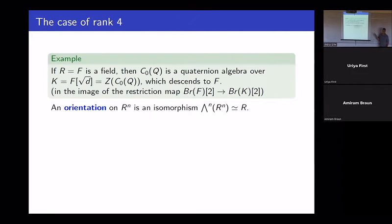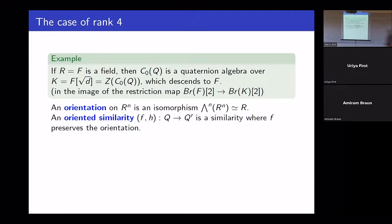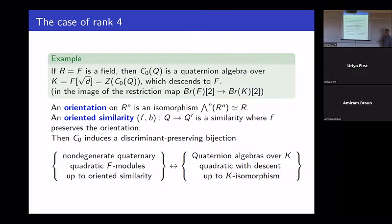For that, we use orientation. An orientation for a free module is a choice of isomorphism from the top exterior power to the ring. For a projective module, you can choose a compatible orientation on each localization. An oriented similarity is a similarity which preserves the orientation. When you restrict to oriented similarities, you really get a bijection over fields between non-degenerate quaternary quadratic F-modules and quaternion algebras over K with descent data, up to K-isomorphisms. This has been done over rings for the non-singular case by Knus, Karimala, and Sridharan.